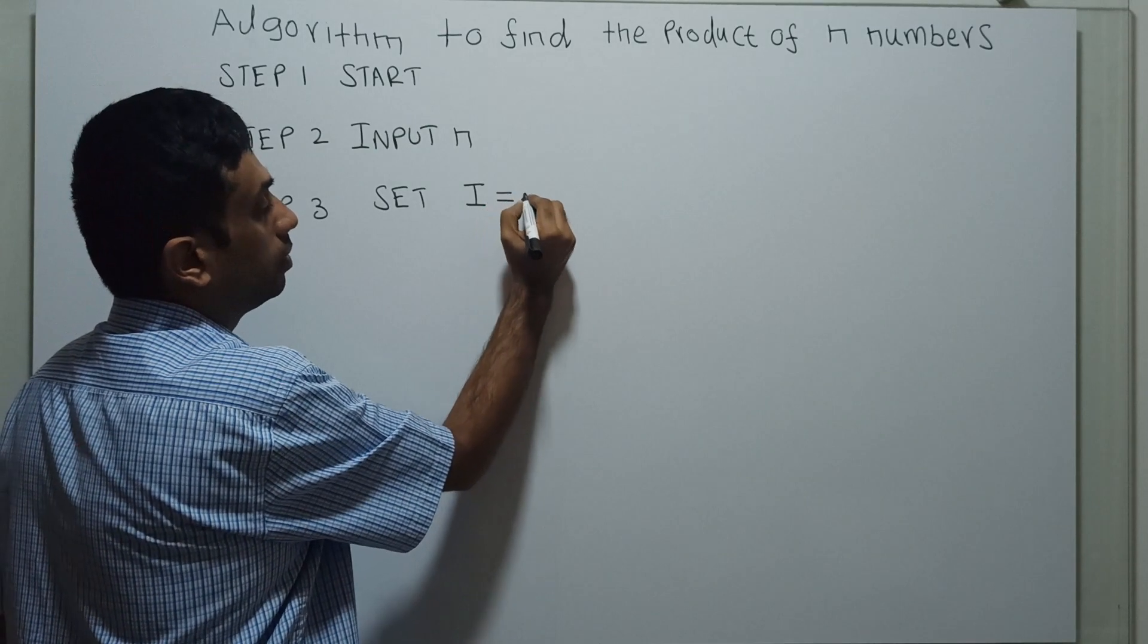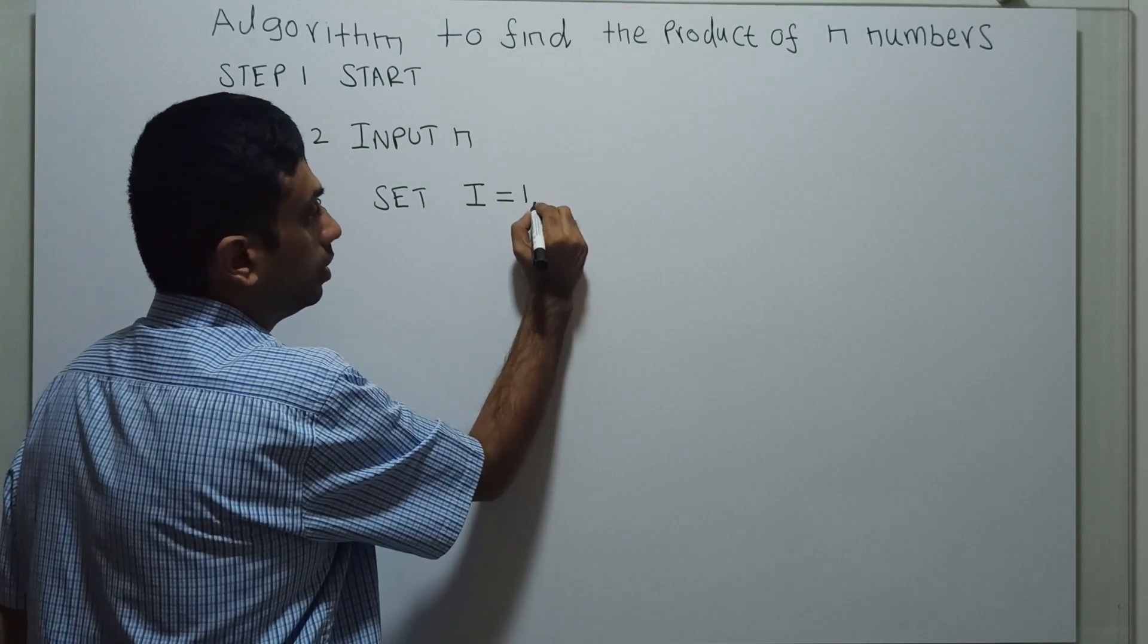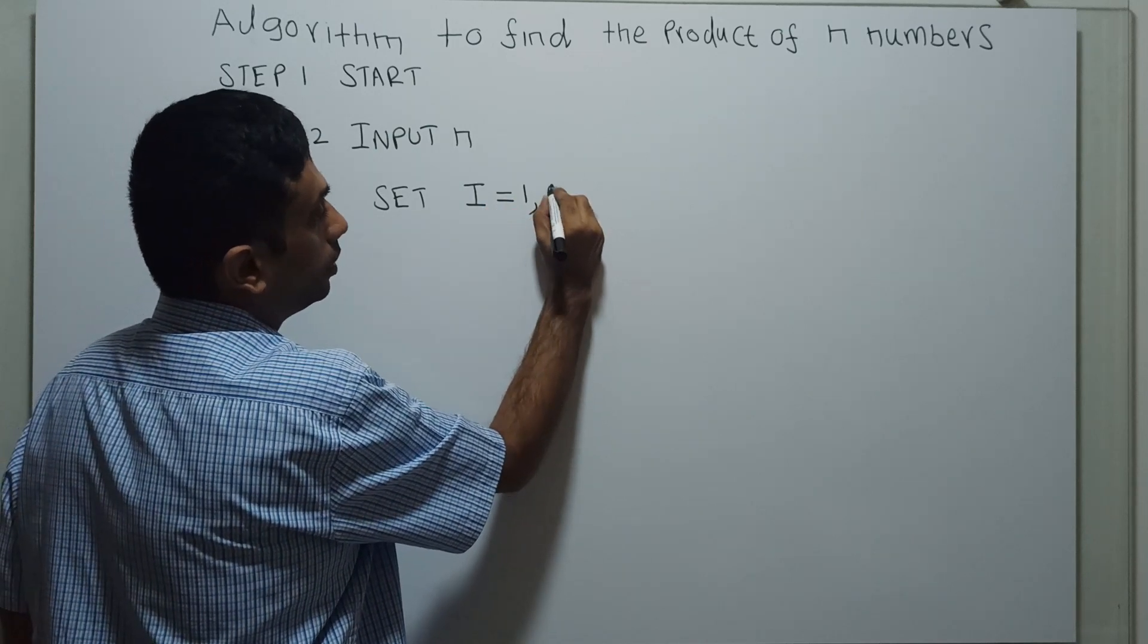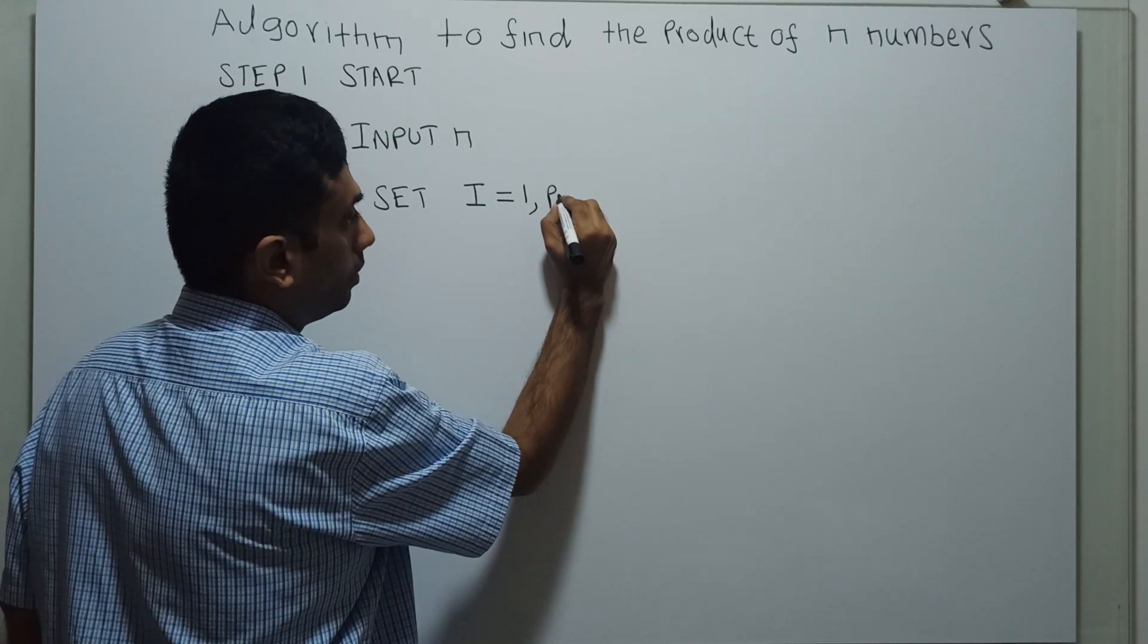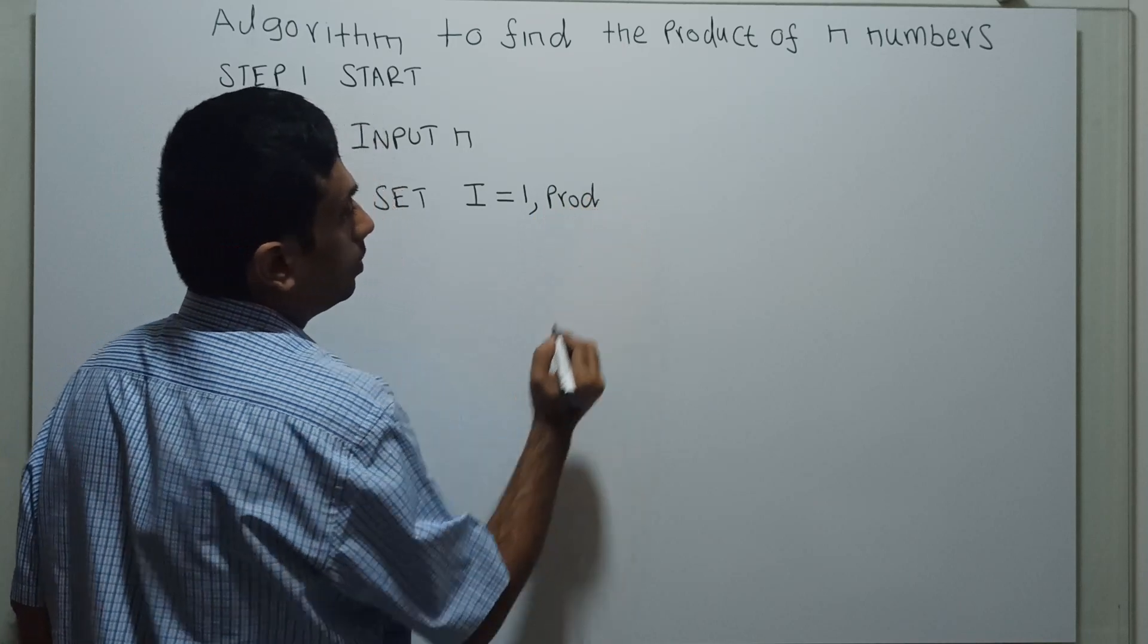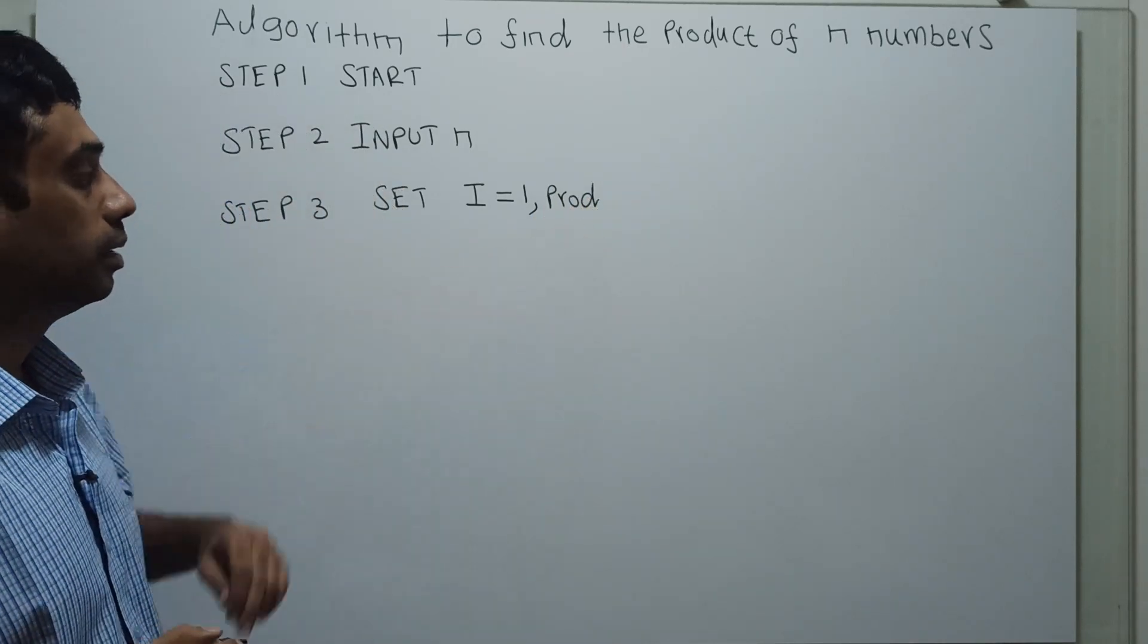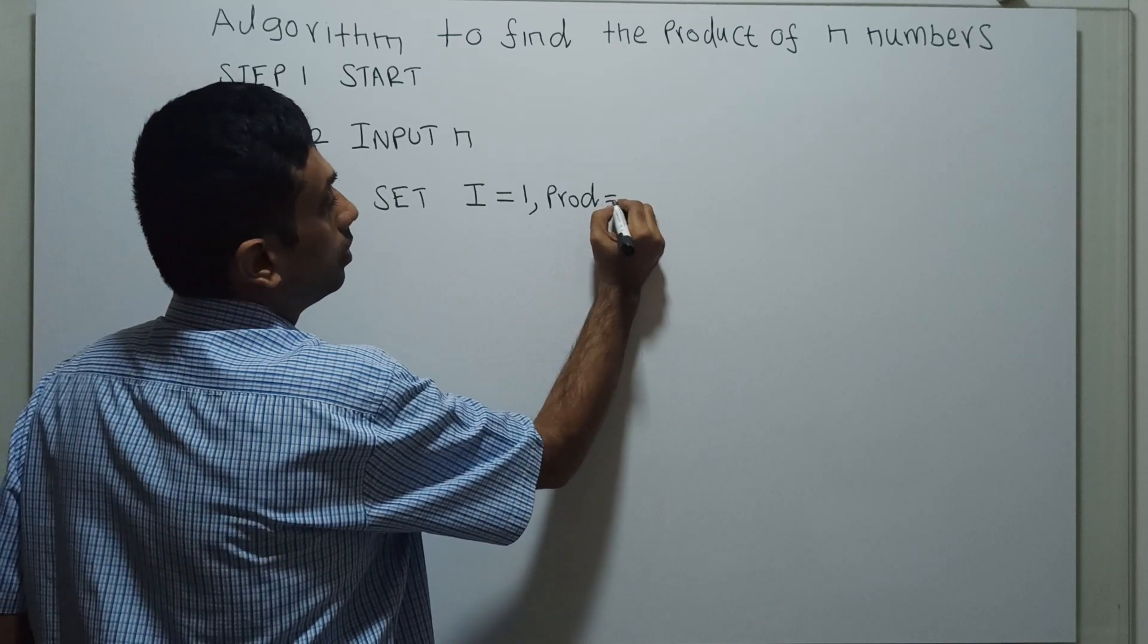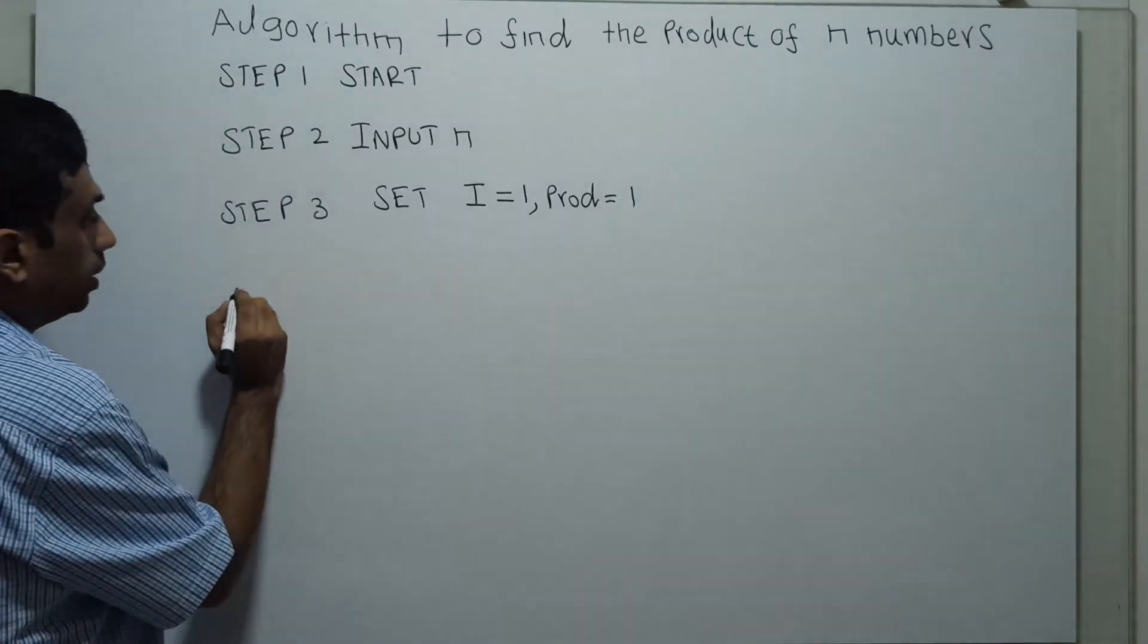equal to 1, and set product equal to 1. I am using a new variable product here.